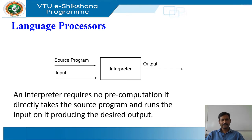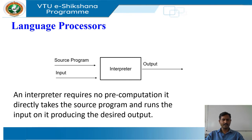An interpreter is another common kind of language processor. Instead of producing a target program as a translation, an interpreter appears to directly execute the operations specified in the source program on inputs supplied by the user. The machine language target program produced by a compiler is usually much faster than an interpreter at mapping inputs to outputs.